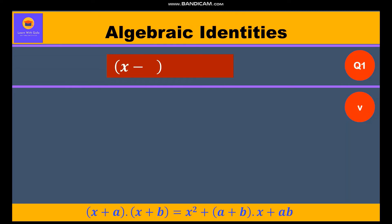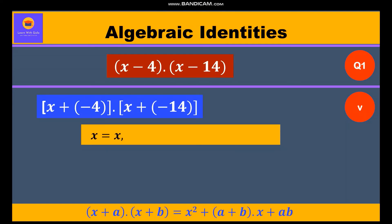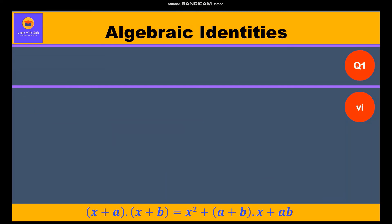Let's move to the fifth part: (x - 4) into (x - 14). Taking the minus sign inside the bracket gives x + (-4) into x + (-14). Here x is equal to x, a is equal to -4, and b is equal to -14. Substituting into Identity 5: x² + (-4 + (-14))x + (-4 × -14), which equals x² - 18x + 56.